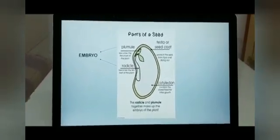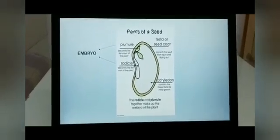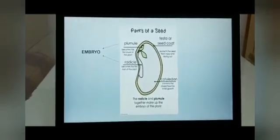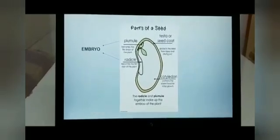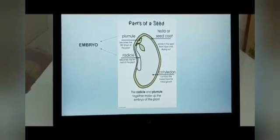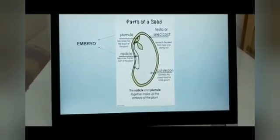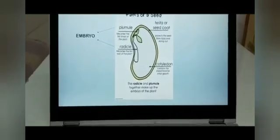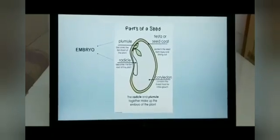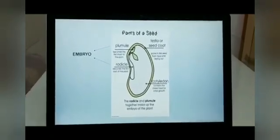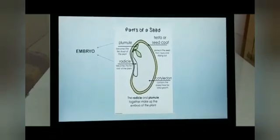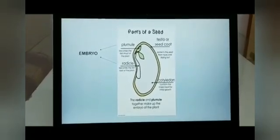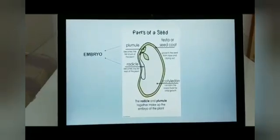Then come two important parts which form the embryo: the Plumule and the Radicle. These together make up the embryo of the plant. The Plumule grows as a shoot of the plant, while the Radicle forms the root of the plant. Cotyledons provide food for the plant until the leaves grow. Once the leaves grow, they start preparing food for the plant. The Testa, or seed coat, is the outer covering of the seed which protects it from any kind of injury or drying out.